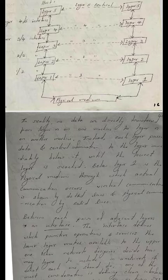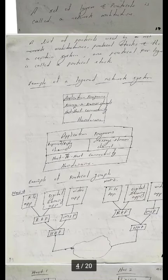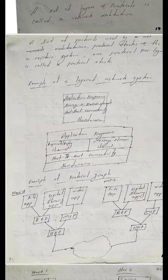Here you can see an example of a layered network system. At the bottom, the hardware is present. Above that is host-to-host connectivity, and the next layer provides process-to-process channels. Through these channels, a process running on one machine is able to communicate with a process running on another machine on the network. Above that, we have different application programs.